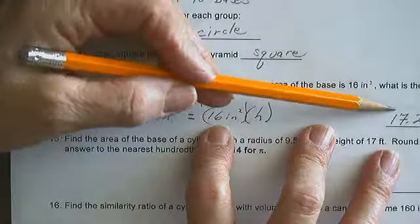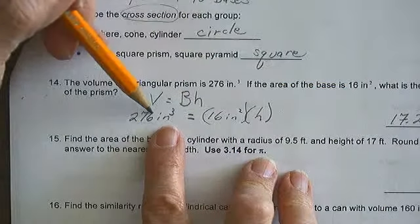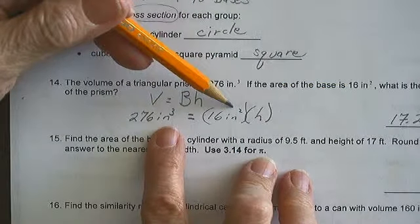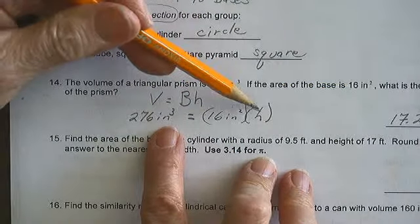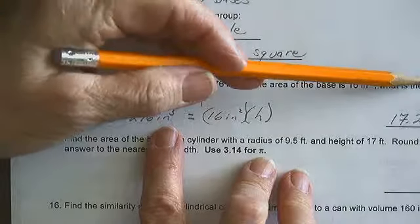Inches cubed divided by inches squared gives me inches, which makes sense for a height.